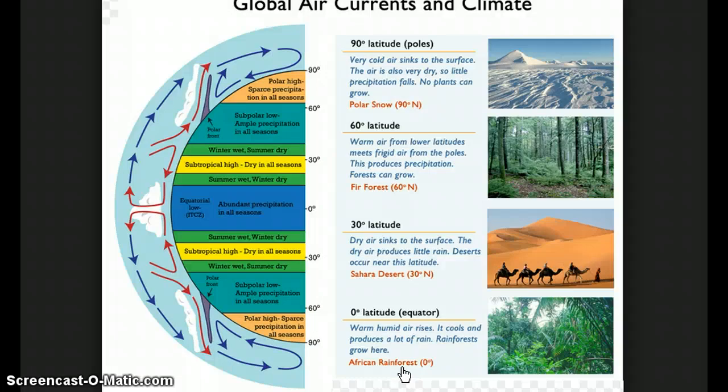As we move away from the equator towards about 30 degrees north latitude and 30 degrees south latitude, this is where the air comes down. Where the air comes down, it pushes down any moisture in the air, so nothing can rise up here to form clouds. When we have no clouds, we have no rain. So at 30 degrees latitude, this is where most of the world's deserts occur.